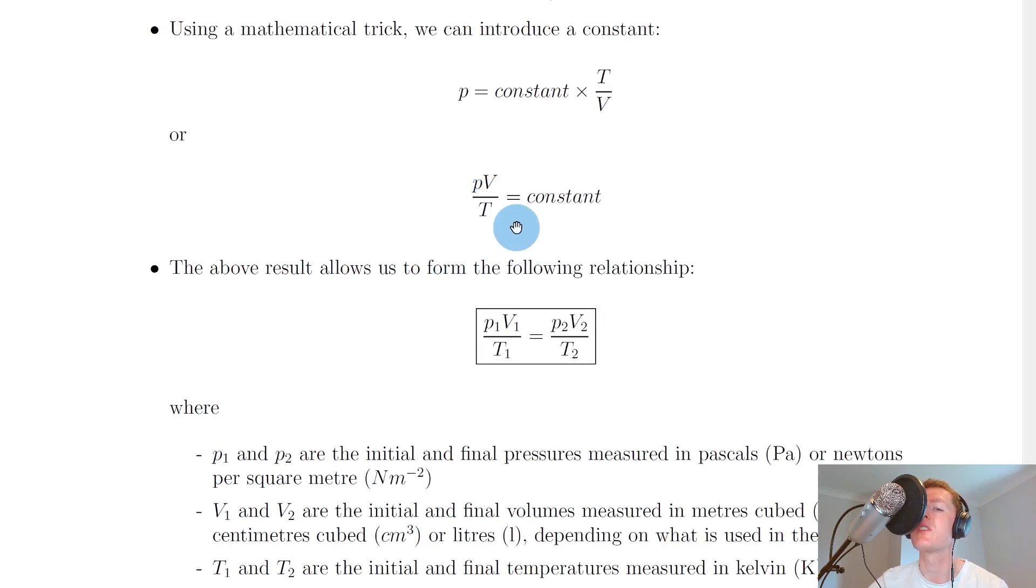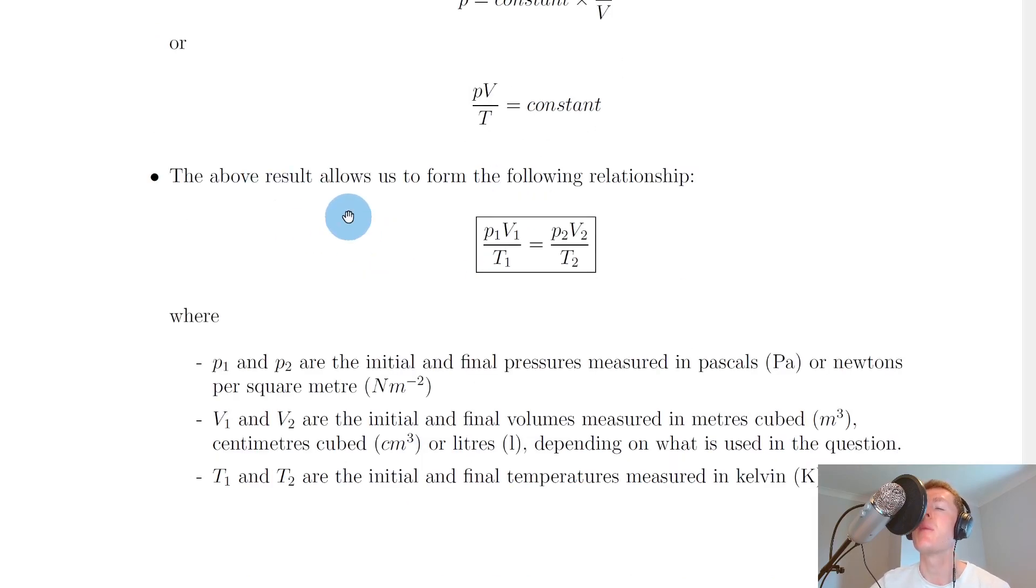and then we can bring the T down underneath and divide both sides by T. So we therefore arrive at this equation here, PV over T equals a constant.